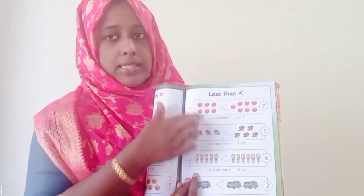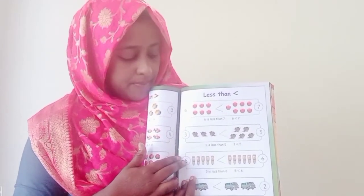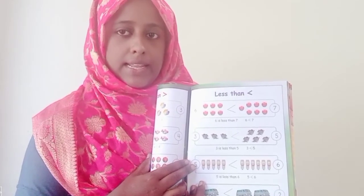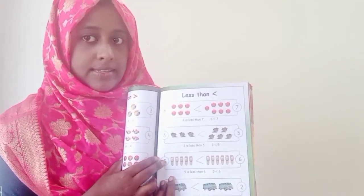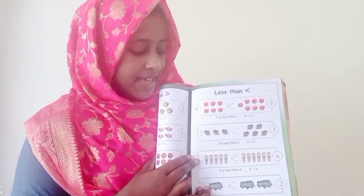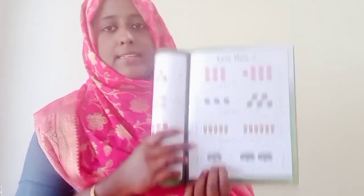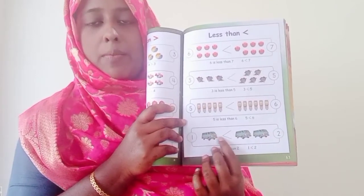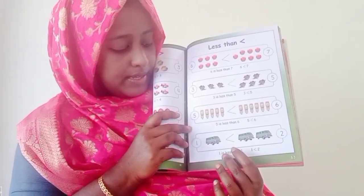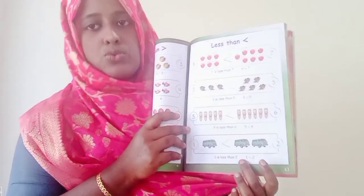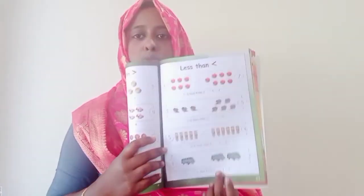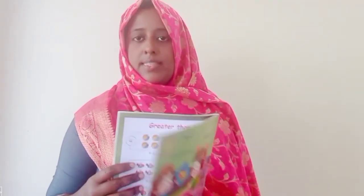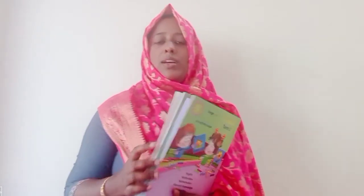That's it. How do you say this? 5 is less than 6. 8 is less than 2. 1 is less than 2. Okay, so we can do less than and greater than.